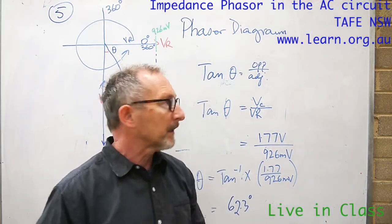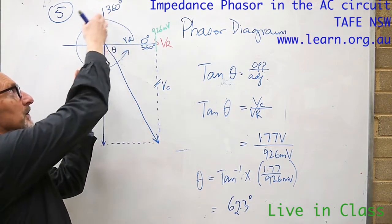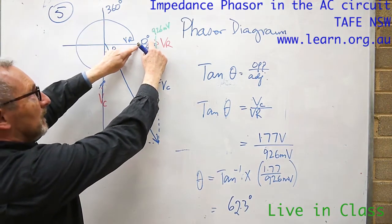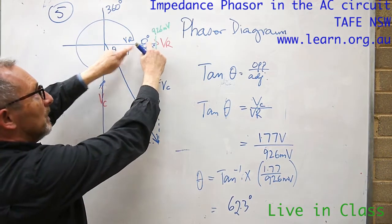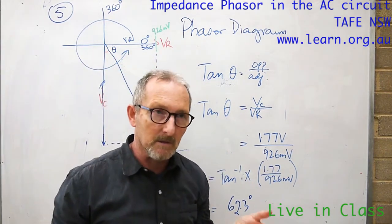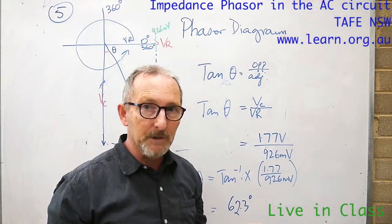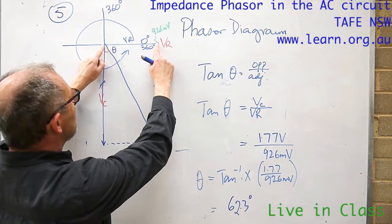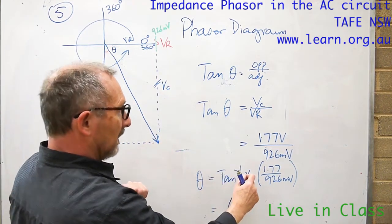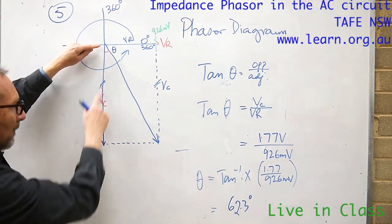In the phasor diagram, remembering that a phasor rotates counterclockwise and our reference is always set at zero on this part of the graph, and knowing that we want the current in the series circuit to be the reference vector, that will also be the voltage across the resistor. So the voltage across the resistor is plotted here. The voltage across the resistor was in fact 926 millivolts.